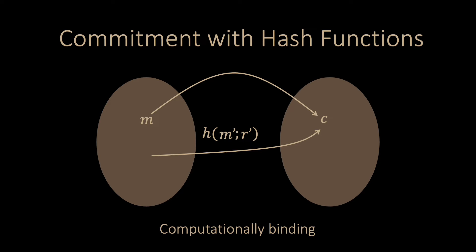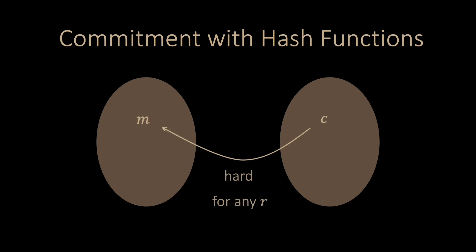What about the hiding property? Hiding is given by the one-way property of hash functions. Given the commitment, it is hard to invert the function. It is, however, not precise to say that the protocol is computationally hiding. For example, Sherlock might learn that Watson thought of an odd number.